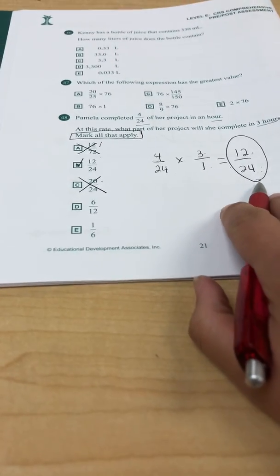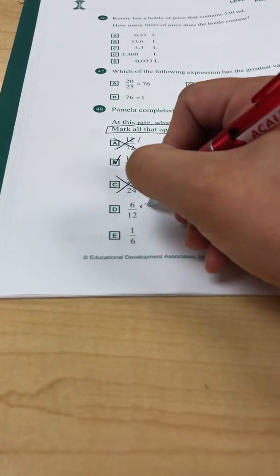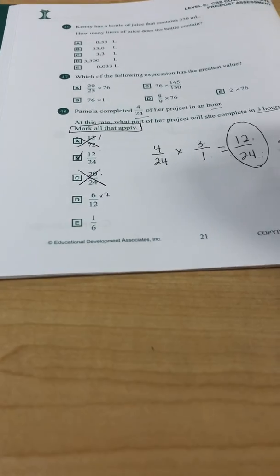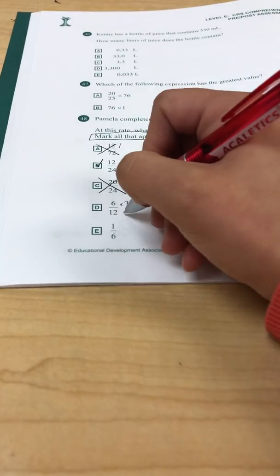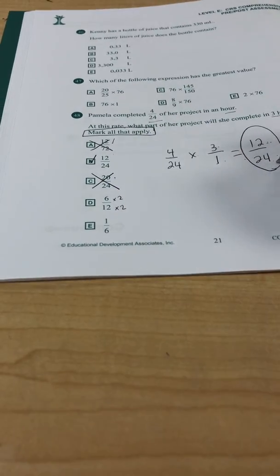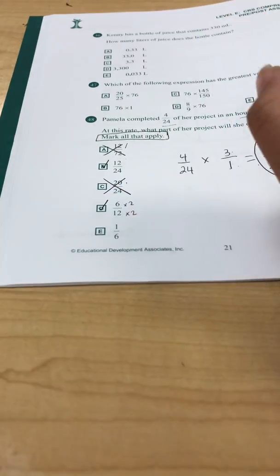I want 12/24ths. Well, 6 times 2 would get me to 12, so that works. That's exactly what I need. And 12 times 2 is 24, also what I need, which tells me that D is equivalent.